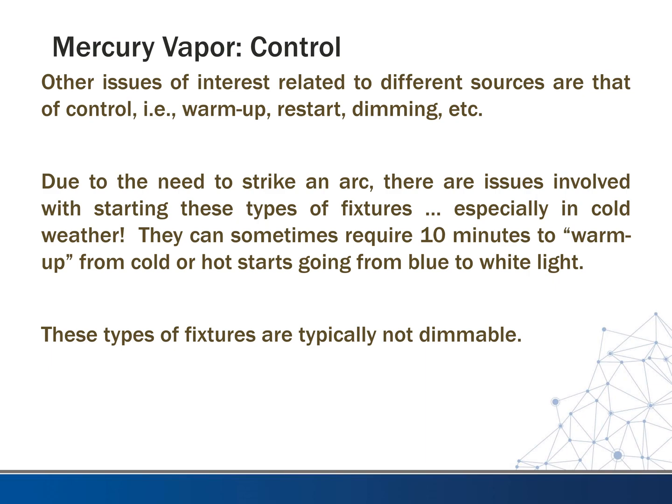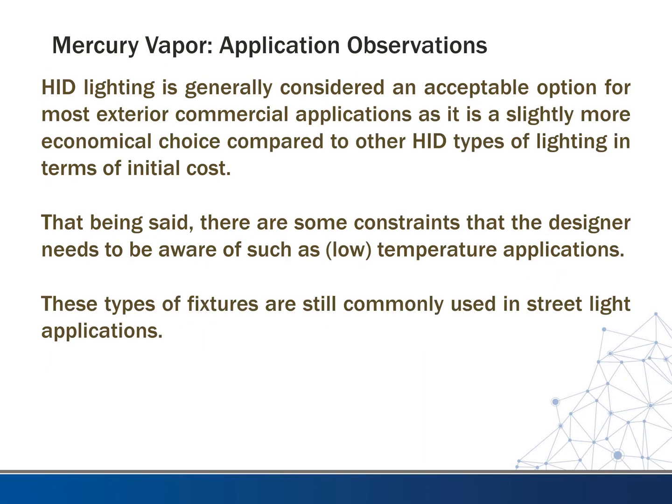Other issues of interest related to different sources are that of control, warmup, restart, and dimming. Due to the need to strike an arc, there are issues involved with starting these types of fixtures, especially in cold weather. It can sometimes require 10 minutes to warm up from cold or hot starts, going from blue to white light. These types of fixtures are typically not dimmable. HID lighting is generally considered an acceptable option for most exterior commercial applications and is a slightly more economical choice compared to other HID types in terms of initial cost. However, there are constraints the designer needs to be aware of, such as low temperature applications. These types of fixtures are still commonly used in street light and roadway lighting applications.